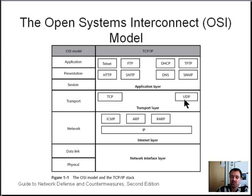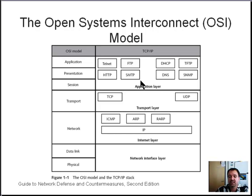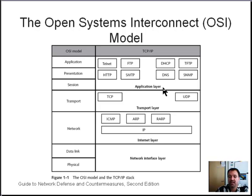We'll see why sometimes we have to use TCP for some communications and sometimes it's okay to use UDP. It's much more efficient to use UDP, but you're going to get errors. Finally, from the OSI model we take the session, presentation, and application layers and combine them into the application layer in the TCP/IP model, which contains the various specific application protocols.